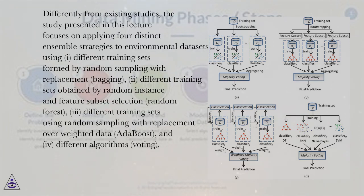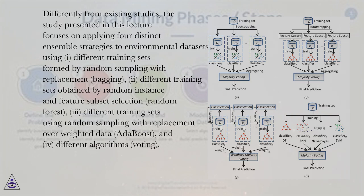Differently from existing studies, this study focuses on applying four distinct ensemble strategies to environmental data sets using: (1) different training sets formed by random sampling with replacement — bagging; (2) different training sets obtained by random instance and feature subset selection — random forest; (3) different training sets using random sampling with replacement with overweighted data — AdaBoost; and (4) different algorithms — voting.